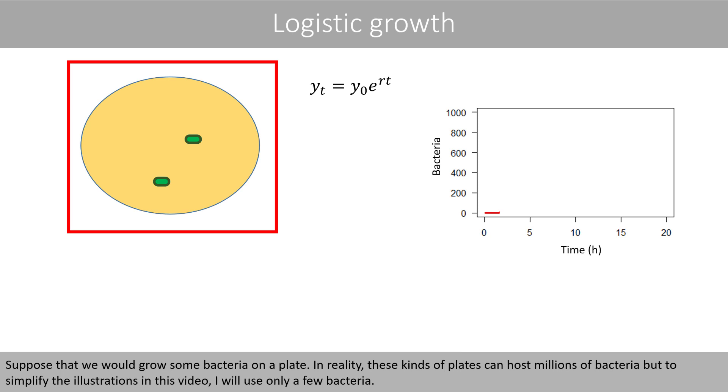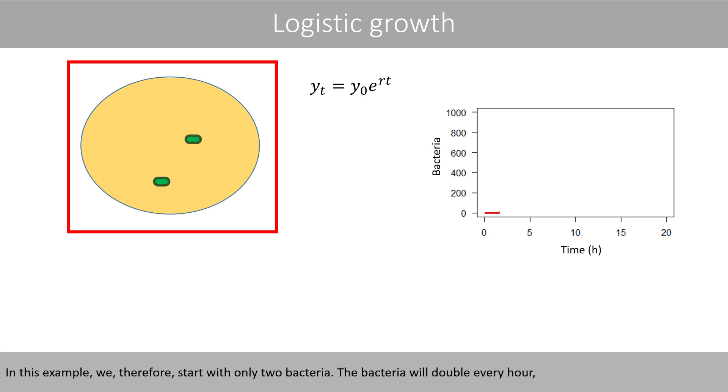Suppose that we will grow some bacteria on a plate. In reality, these kinds of plates can host millions of bacteria, but to simplify the illustrations in this video, I will use only a few bacteria. In this example, we start with only two bacteria. The bacteria will double every hour, which means that after one hour we will have four bacteria, and after two hours we will have eight bacteria. After three hours, sixteen bacteria and so forth.